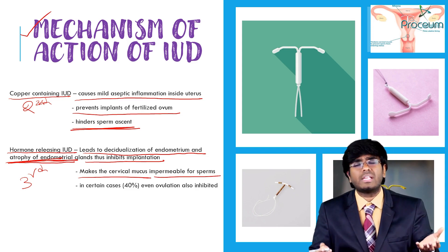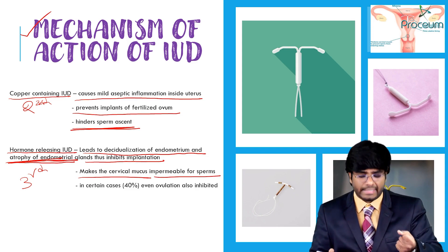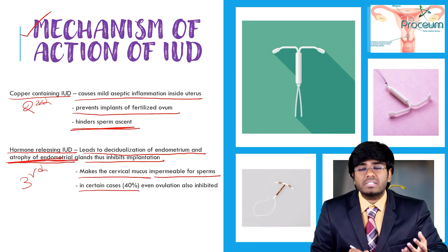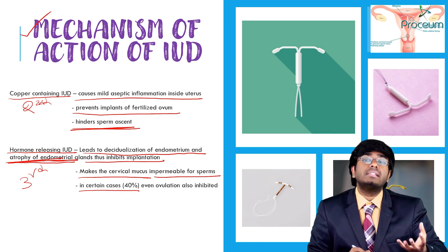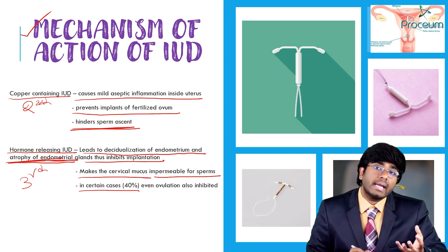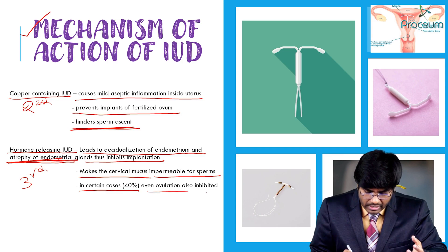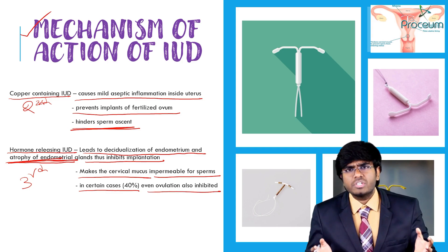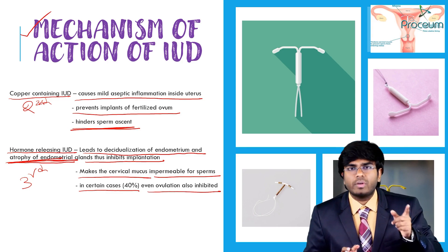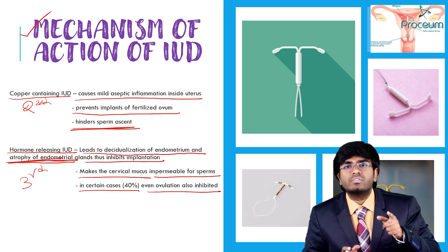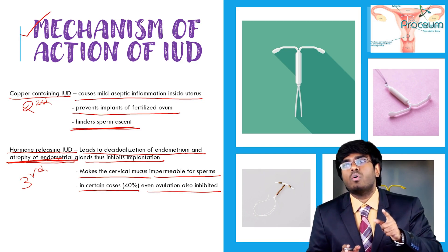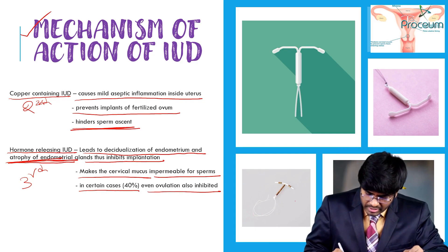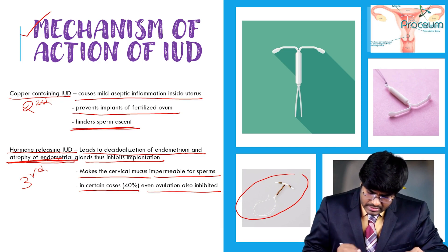Hormonal IUDs also make the cervical mucus impermeable to sperm — progesterone thickens the cervical mucus. In approximately 40% of cases, hormone-containing IUDs will also inhibit ovulation, because high levels of progesterone give negative feedback to LH, and without an LH surge, ovulation does not occur.